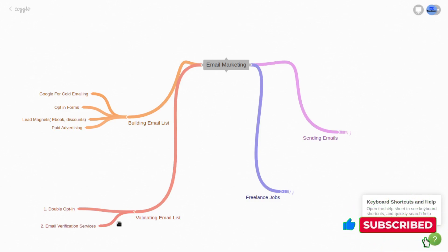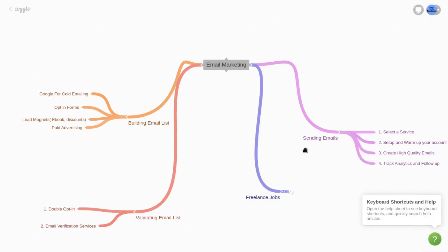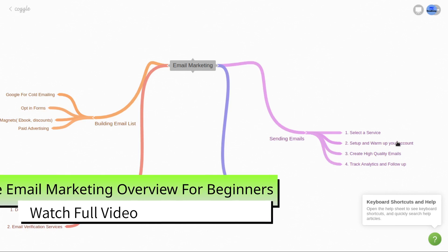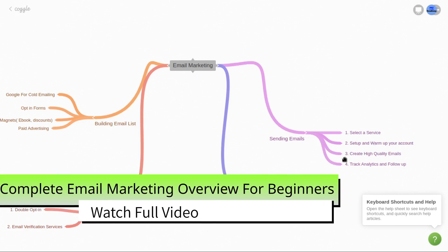After verifying your email list, the next step is sending your emails. Sending emails depends on your skills, your budget, and other factors. You need to select an email marketing application — there are many tools like MailChimp, Sendinblue, Sendmail, Omnisend, and many others. Select a tool according to your budget, set up your account with your basic details, and then warm up your account. I have made a lot of videos about sending bulk emails with different email marketing applications.